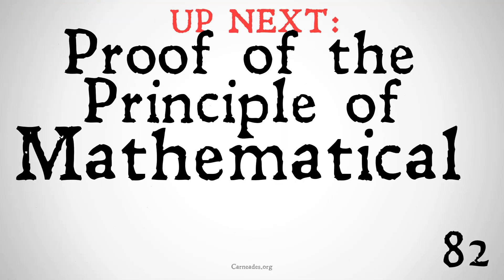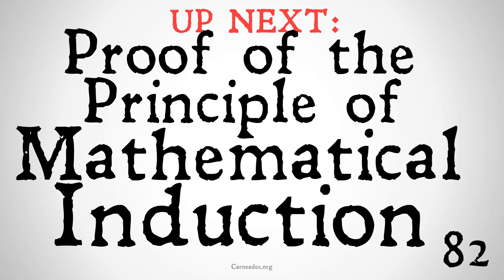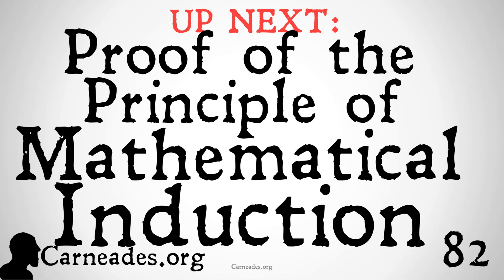Up next, we are going to be doing a proof of the principle of mathematical induction — that's Peano postulate number five. We are jumping over postulate four, because as complicated as mathematical induction may seem, it will actually take far more work to prove postulate four. So we'll prove postulate five first, then backtrack and look at several lemmas needed before we can prove four. Watch this video and more at carneades.org, and stay skeptical, everybody.